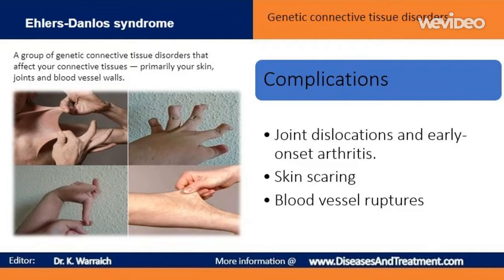Complications depend on the types of signs and symptoms you have. Complications may include: overly flexible joints can result in joint dislocations and early onset arthritis. Fragile skin may develop prominent scarring. People who have Ehlers-Danlos syndrome, vascular type, are at risk of often fatal ruptures of major blood vessels. Some organs, such as the uterus and intestines, also may rupture. Pregnancy can increase these risks.